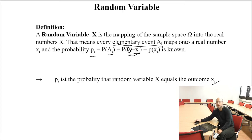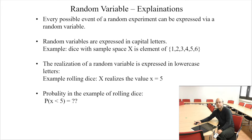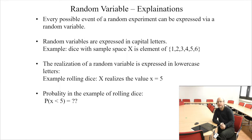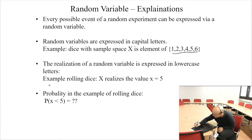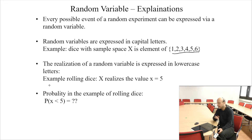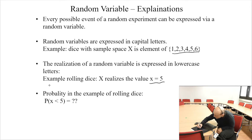I think you have already heard this in your introductory statistics course. Every possible event of a random experiment can be expressed via a random variable — this is just the general mapping. If you take a dice, your sample space is rolling the dice, and the possibilities are 1, 2, 3, 4, 5, 6. If you roll the dice and get a 5, that is then the realization of your random variable.